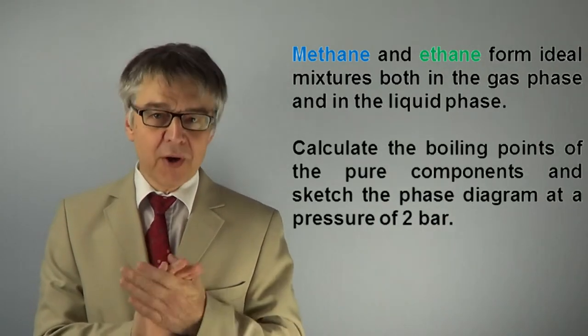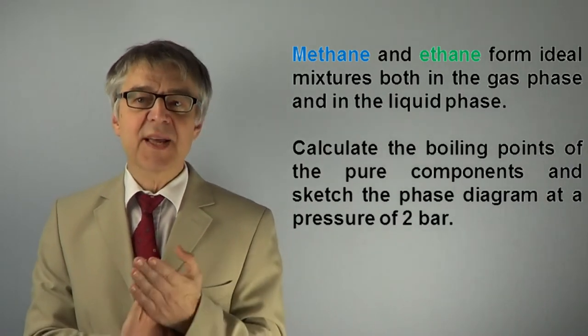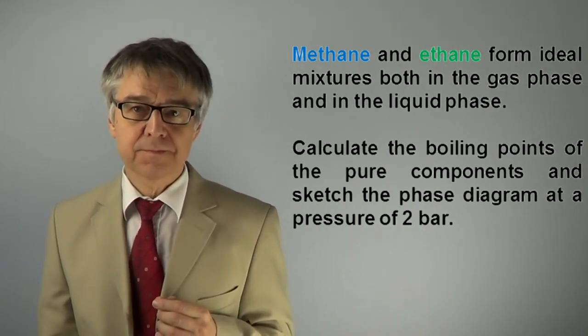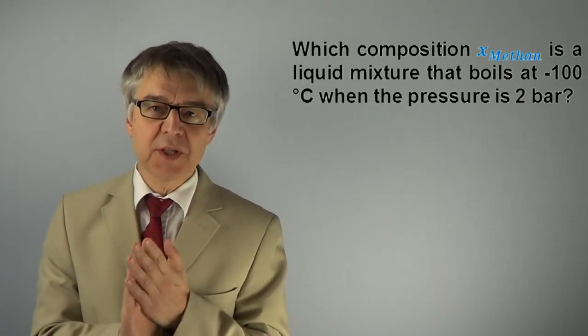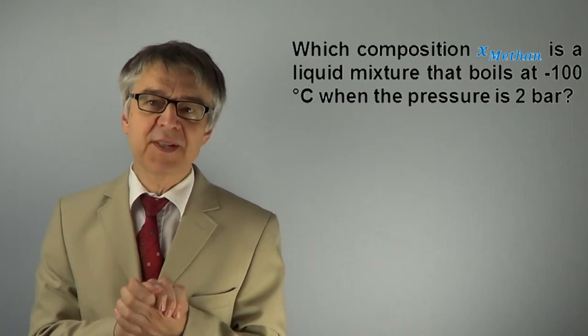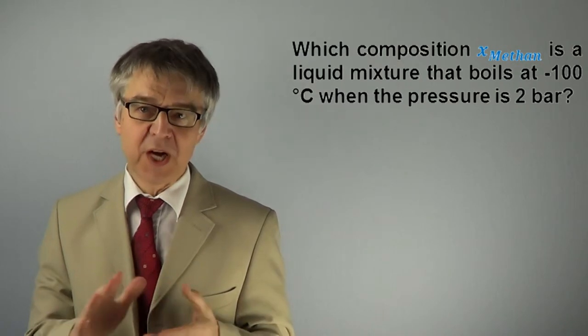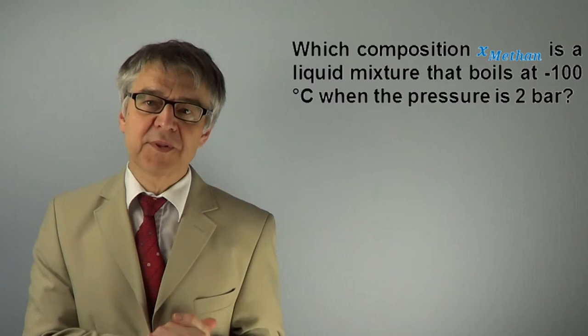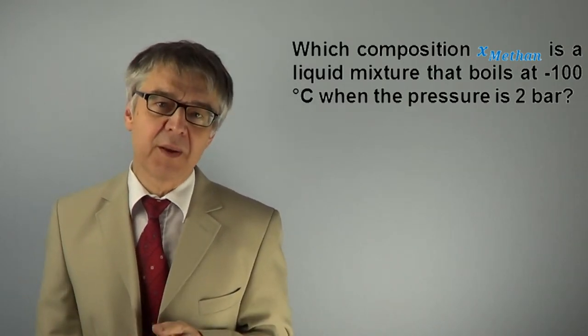Calculate the boiling points of the pure components and sketch the phase diagram at an external pressure of two bars. Which composition is a liquid mixture that boils at exactly negative 100 degrees Celsius when the pressure is 2 bars? What is the composition of the gas phase above this boiling mixture?